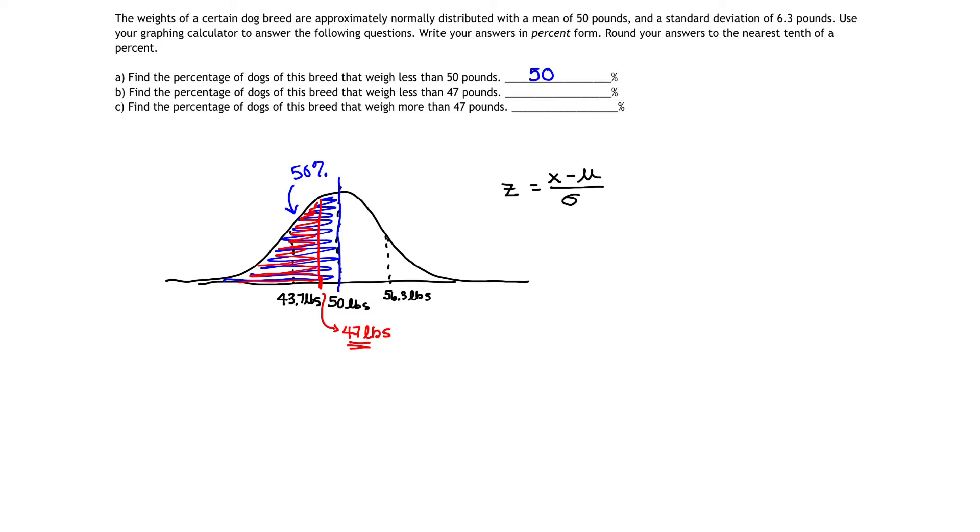Z is X minus the mean over the standard deviation. So let's actually calculate the Z value that corresponds to 47 pounds. So 47 is my X value. My mean is 50. And my standard deviation is 6.3.